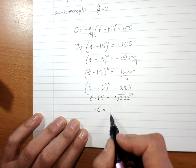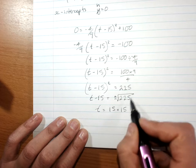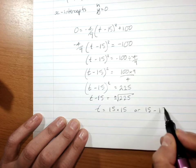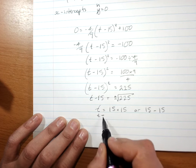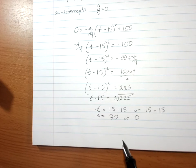So t will be 15 plus 15, square root of 225, or 15 minus 15. So t equals 30 or 0. I've found the x-intercepts.